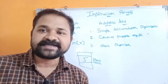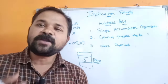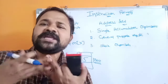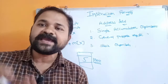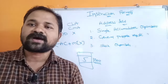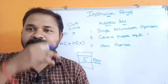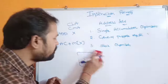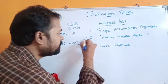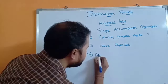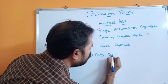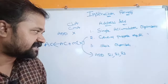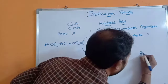The second organization is general purpose register organization. Here the corresponding instruction contains multiple addresses. The addresses may be either registers, memory operands, or some combination. For example, ADD R1, R2, R3 — when this instruction is executed, the contents of R2 and R3 will be added and the result is transferred to R1.